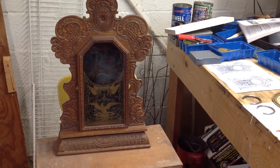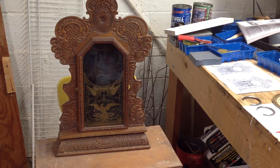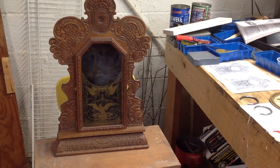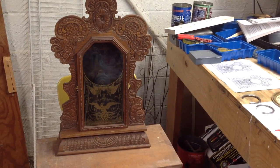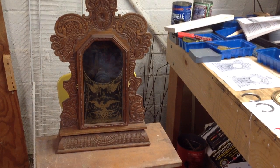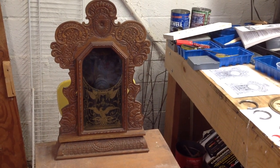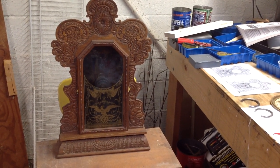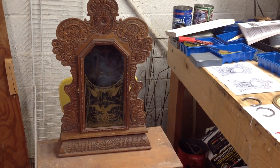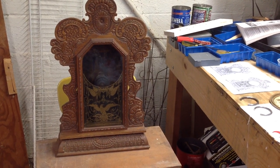I posted photographs of this clock on the NAWCC forums. That's the National Association of Watch and Clock Collectors. And someone helpfully identified that this model is called a Gila.